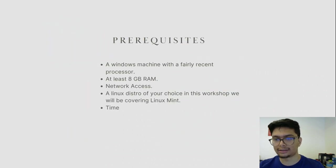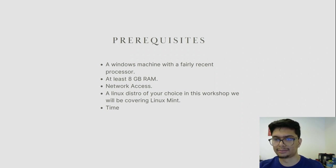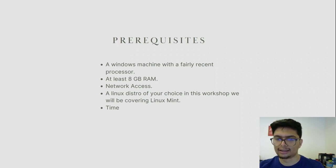What are the prerequisites you need to follow along with this workshop? You need a Windows machine with a fairly recent processor, at least 8GB RAM, network access, and a Linux distribution of your choice. In this workshop we will be covering Linux Mint, and you will need time.